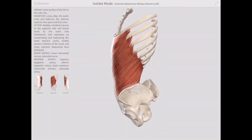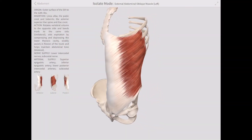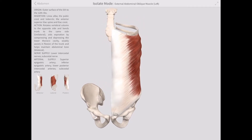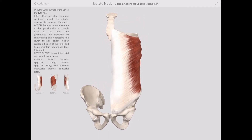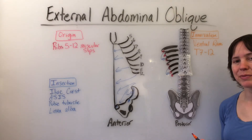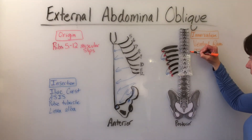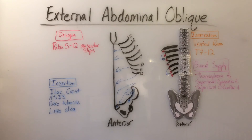For another visual, here is a model from the Complete Anatomy app. The innervation is the ventral rami T7 through 12. The blood supply are the medial branches of the musculophrenic artery, the superficial epigastric artery, and the superficial circumflex artery.